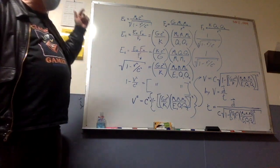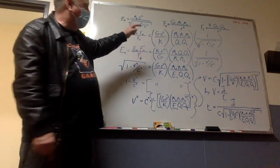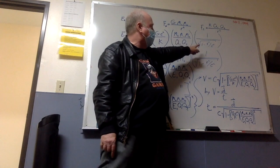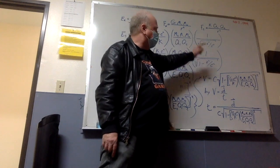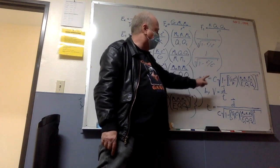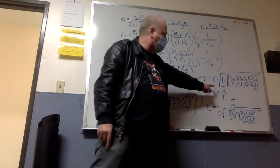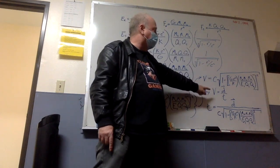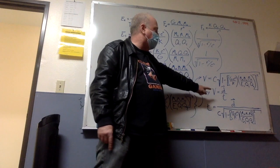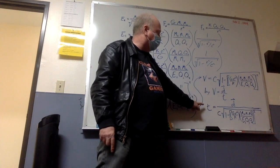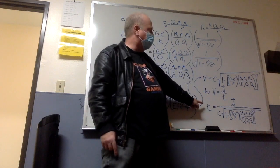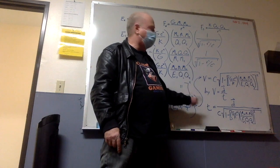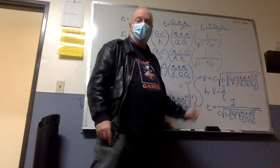If you take the velocity from Einstein's equation and break it up into a distance vector over time, then solve the equation for time, you get the true nature of time.